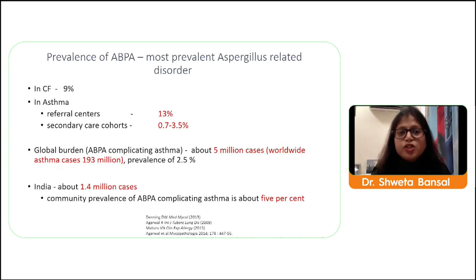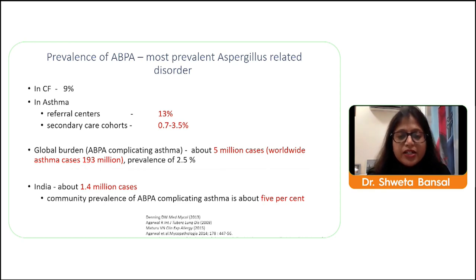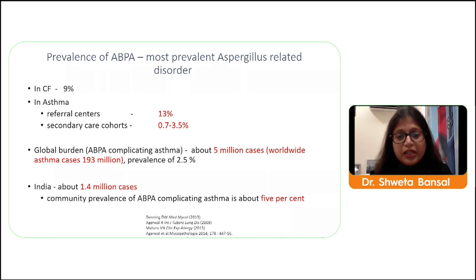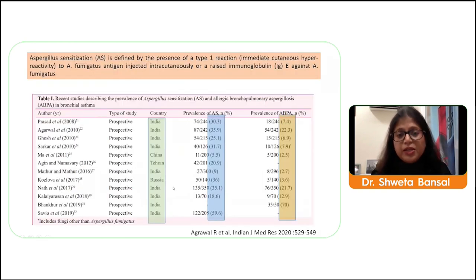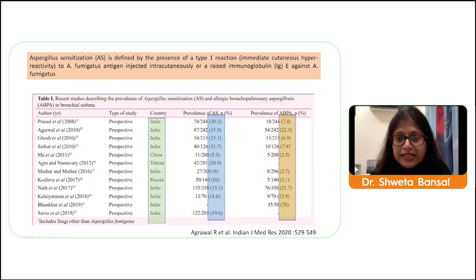Regarding prevalence of ABPA: in cystic fibrosis it is about 9 percent; in asthma at reference centers it is as high as 13 percent. According to GINA guidelines, of 193 million asthma cases worldwide, 5 million are diagnosed with ABPA — a prevalence of 2.5 percent. In India, about 1.4 million cases are prevalent every year. Studies from India show prevalence as high as 22 to 70 percent in some series.